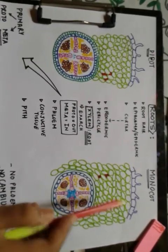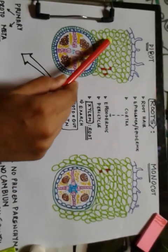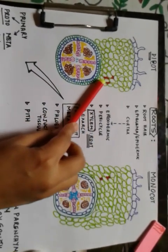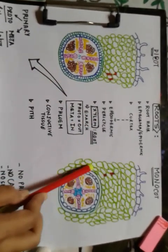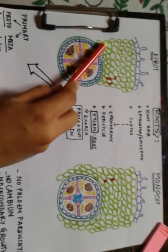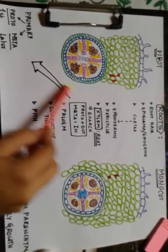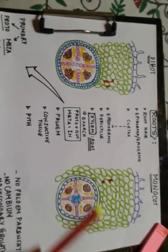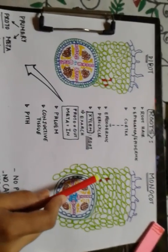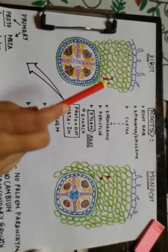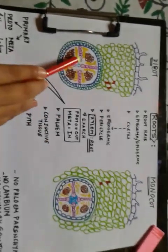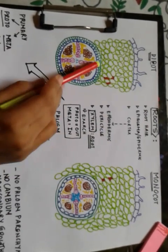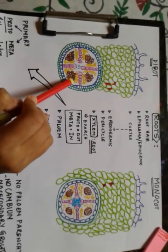This parenchymatous cortex is present in both dicot and monocot — just because I've drawn an extra layer on one side doesn't mean it's absent on the other. The key difference mentioned in good quality books is that the cortex with intercellular spaces is more extensive in case of monocot roots and comparatively less extensive in case of dicot roots.